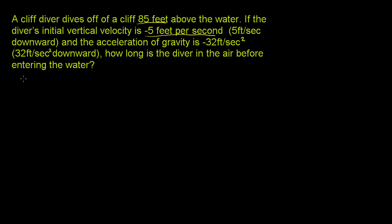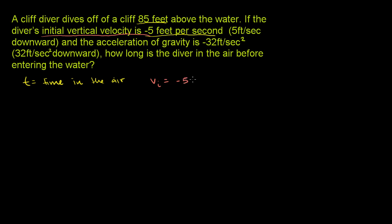Let's set a variable t to be what we want to solve for — how long is the diver in the air? We have the initial vertical velocity, and that's what we care about. We just care about what's going on in the vertical direction. So our initial velocity is negative 5 feet per second.